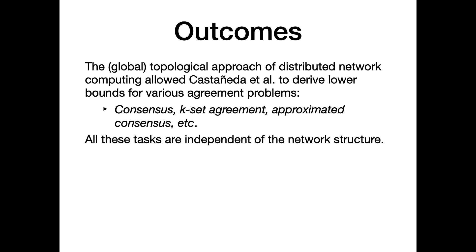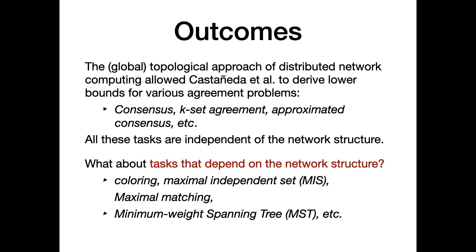The crucial point is that these tasks — consensus, k-set agreement — have specifications that are independent of the network structure. A natural question, and the motivation for this paper, is: what about tasks that depend on the network structure? Most tasks in network computing actually refer to the network structure: coloring, maximal independent set, maximal matching, minimum weight spanning tree, etc. The output of these tasks depends on the structure of the network.